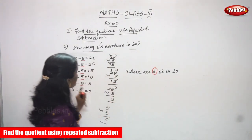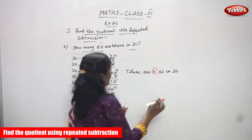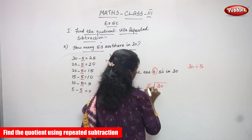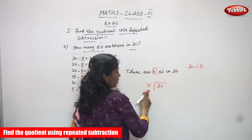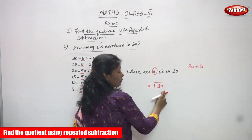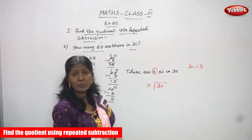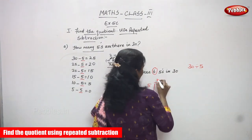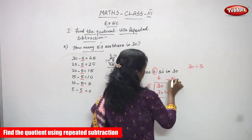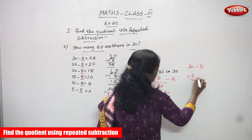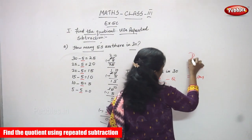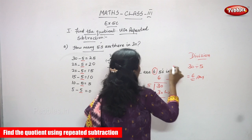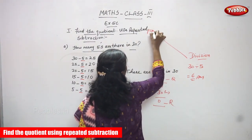This is repeated subtraction, otherwise called division. Now we are going to divide 30 by 5 using the division method. 30 is the dividend and 5 is the divisor. First compare: 3 is less than 5, so take the next digit — that is 30. Using the 5 times table: 5×6=30. Write 6 here. 30 minus 30 is 0. So 6 is the quotient and 0 is the remainder.